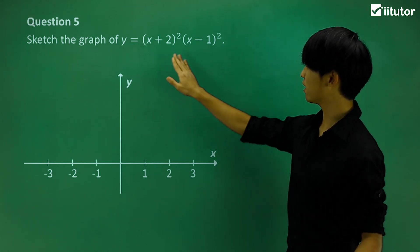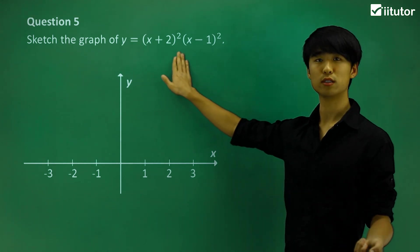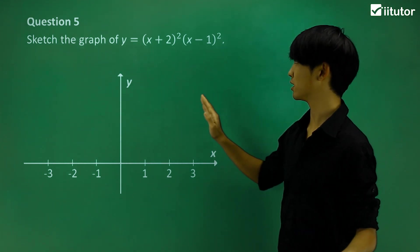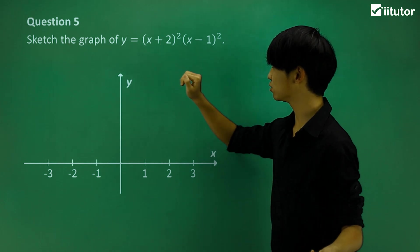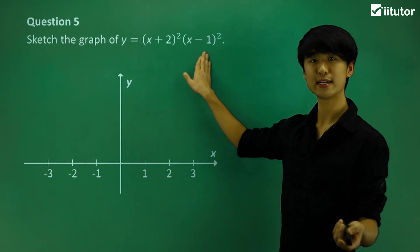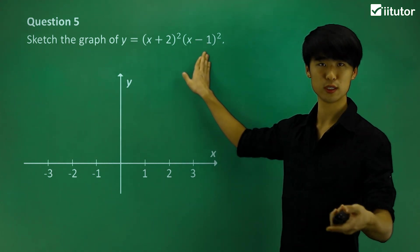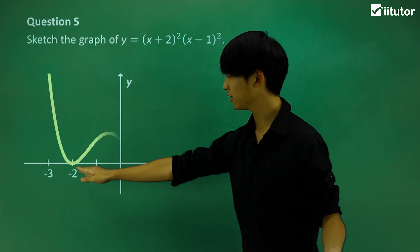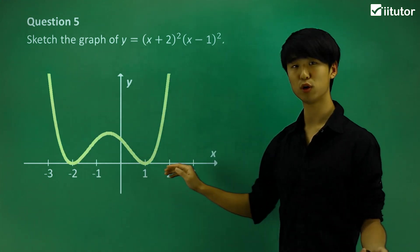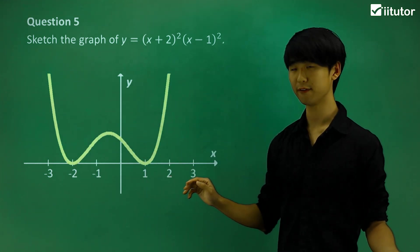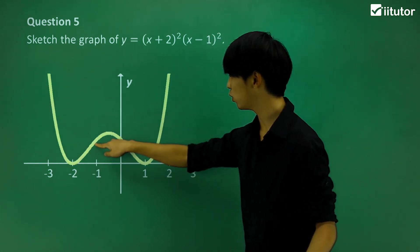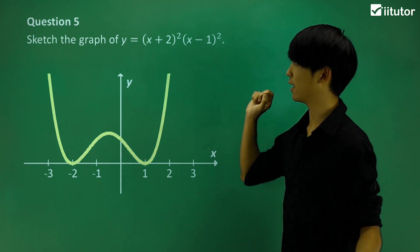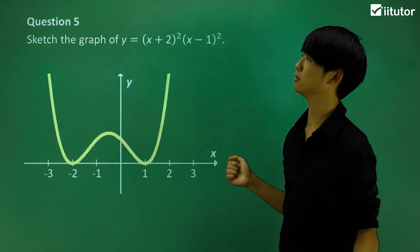Sketching the next graph, we have two double roots: a double root at x equals negative 2 and a double root at x equals positive 1. At both negative 2 and positive 1, the graph is going to bounce off twice. It is a positive graph, so it looks like a positive quartic with two bounces.